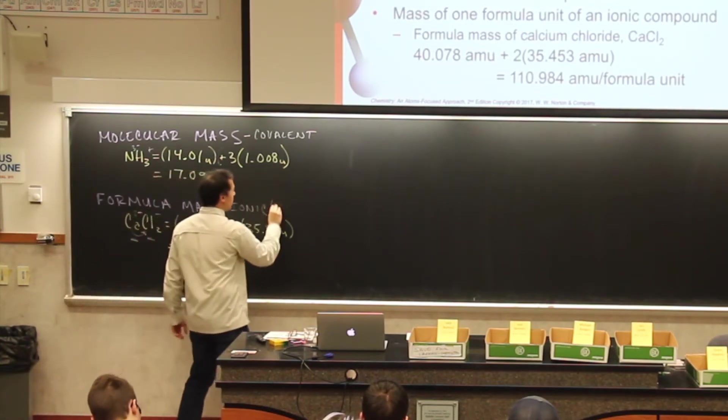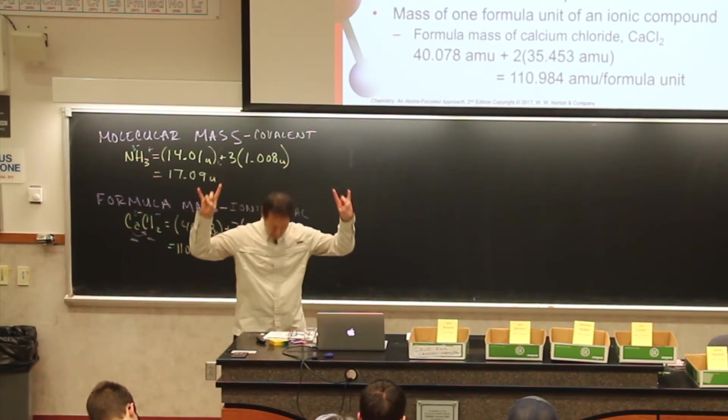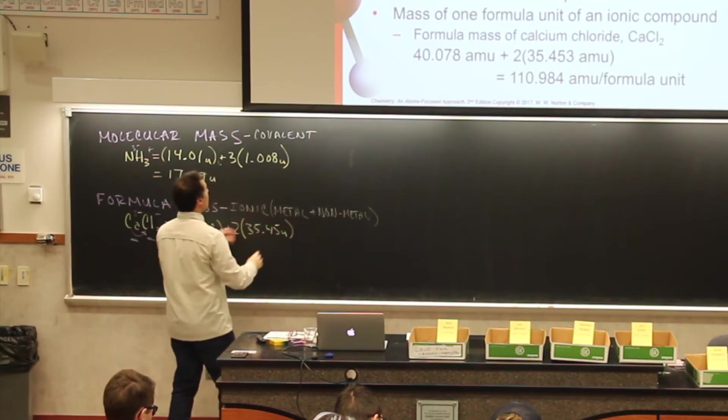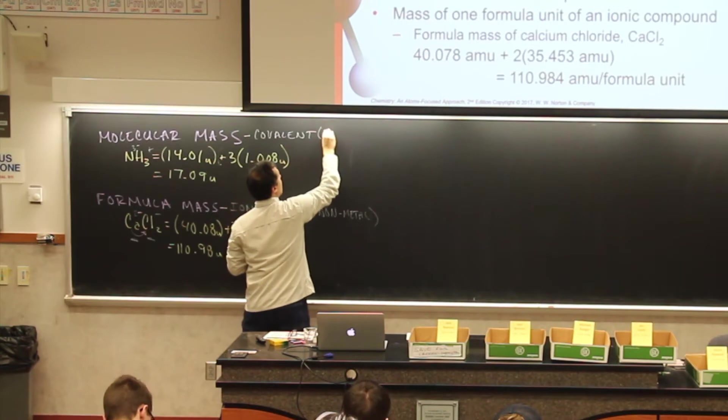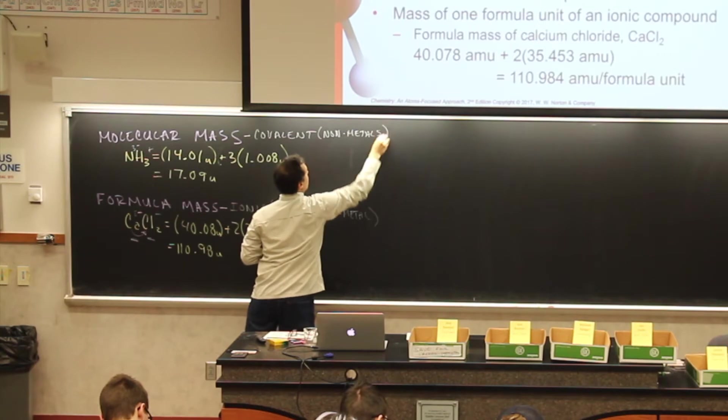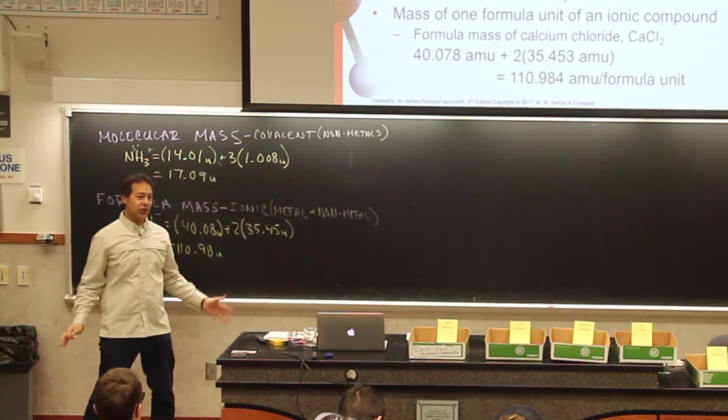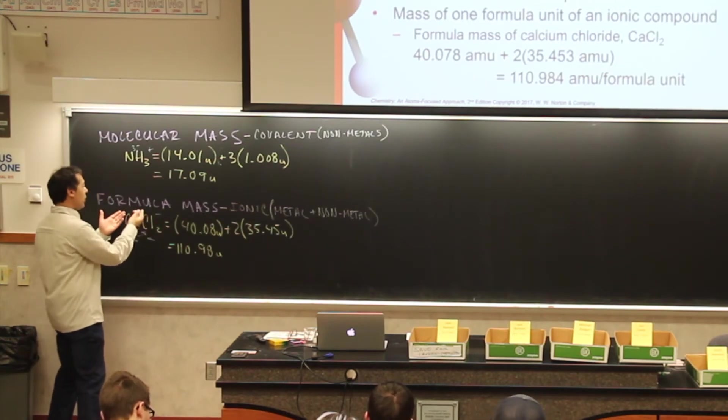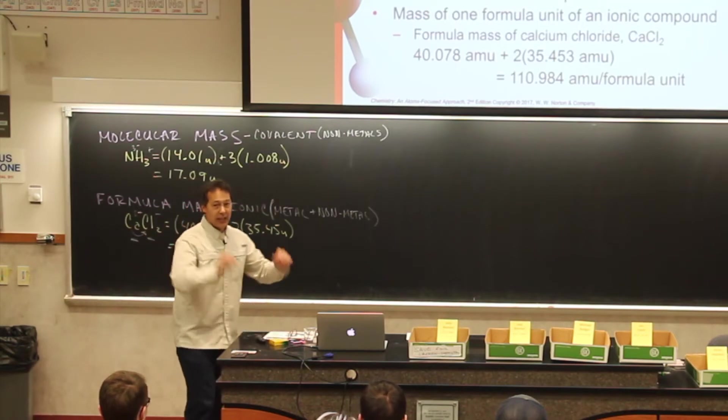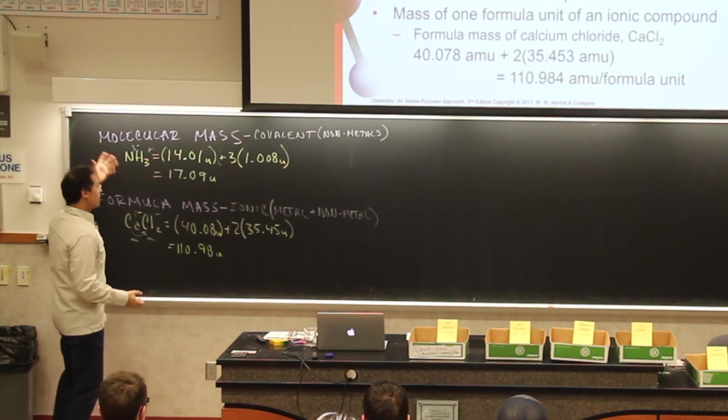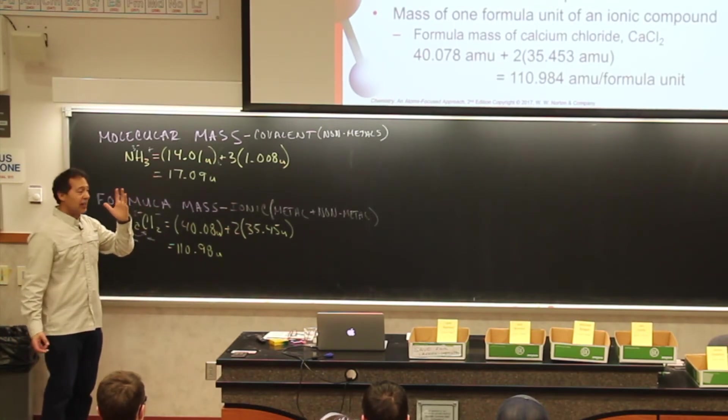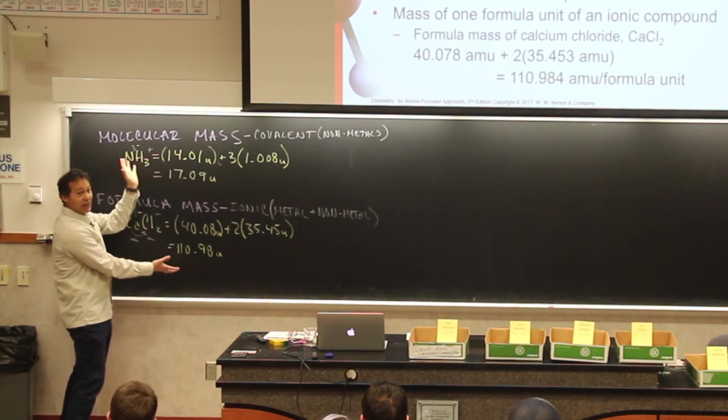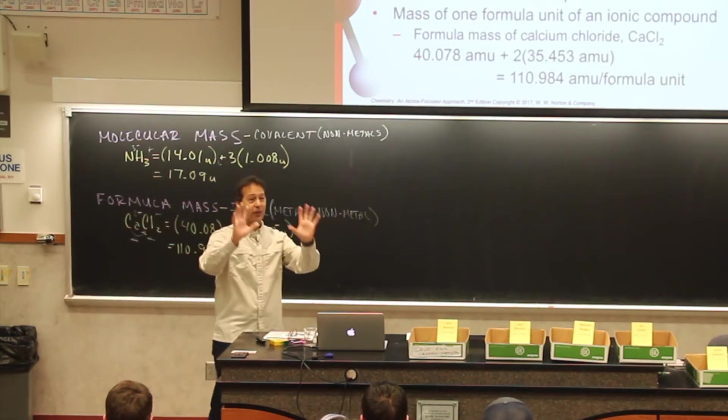If it's a metal and a nonmetal, yes. So ionic is metal and nonmetal. Covalent will generally be nonmetals. Now this is a generalization, not 100% always true, but generally speaking, if you have a metal and a nonmetal, it's going to be ionic and therefore we would use the term formula mass. I'm making kind of a deal about this because you'll see these terms used and some students scratch their heads. That's the difference, but it doesn't matter because you're going to do the same thing anyway.